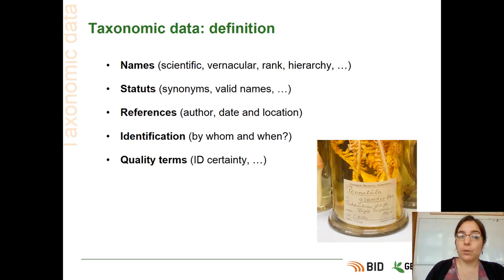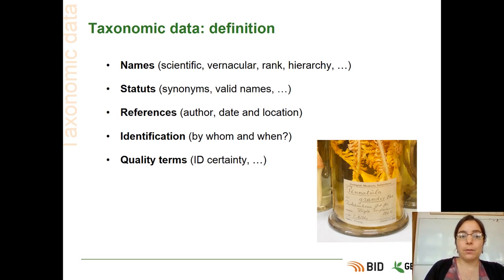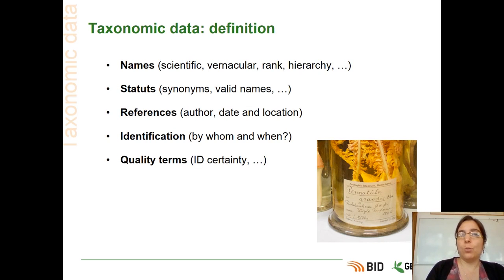You can also have some status — this name is a synonym of this name, this name is valid, this name is not valid anymore. You can also have some references, such as the author, the date and location of the description of the species, the identification — who and when was this specimen or individual identified.